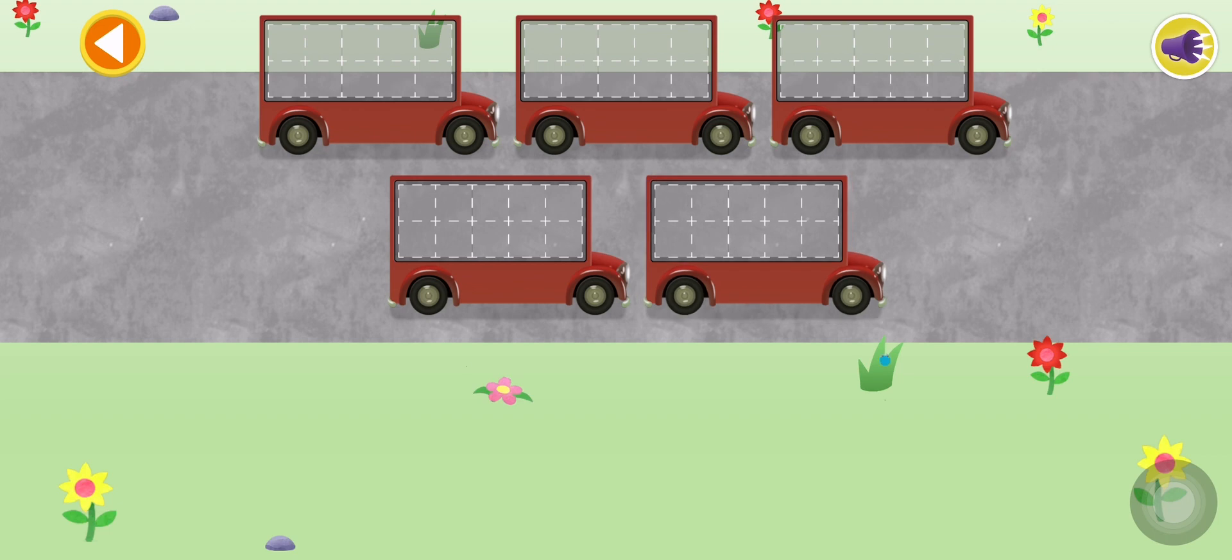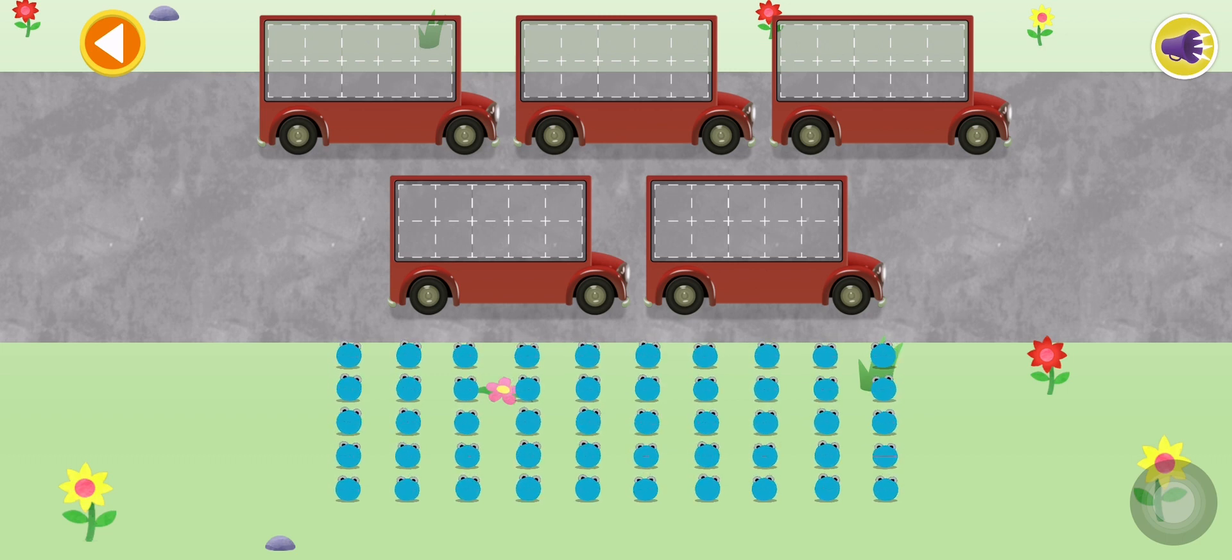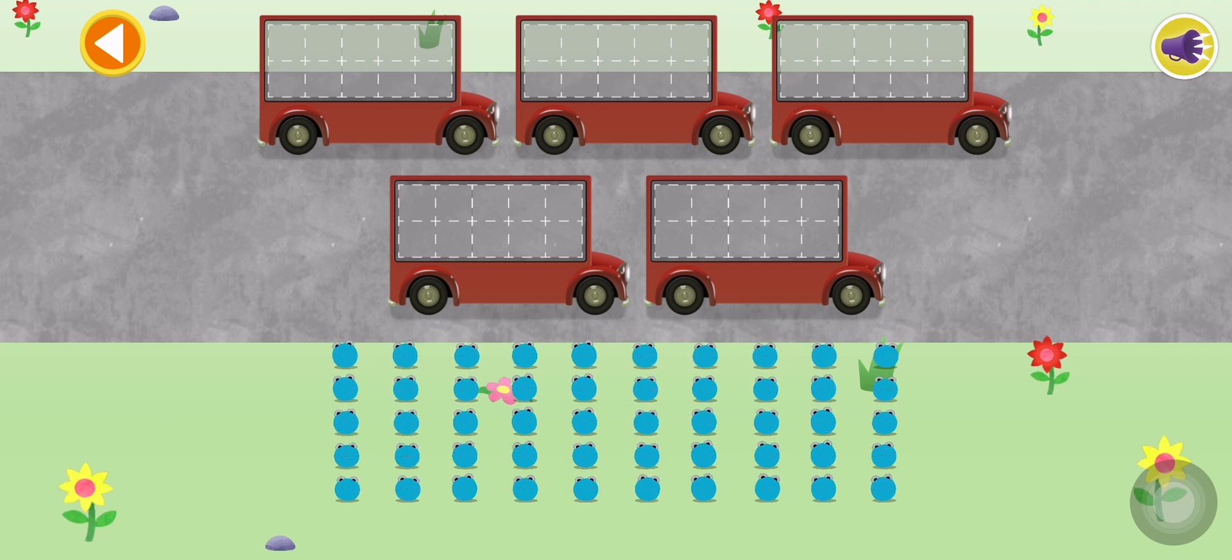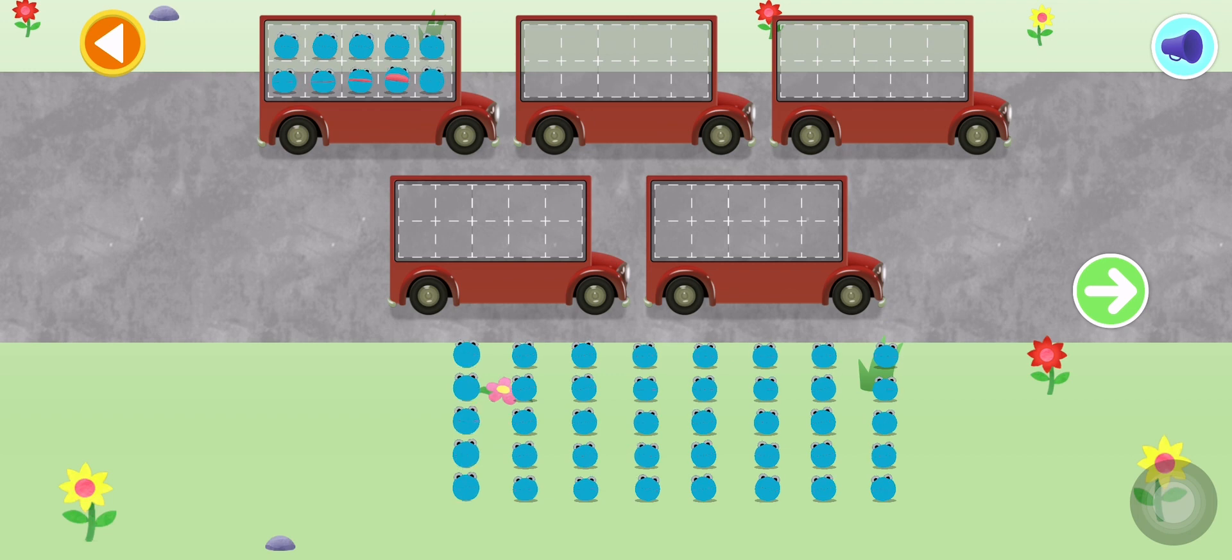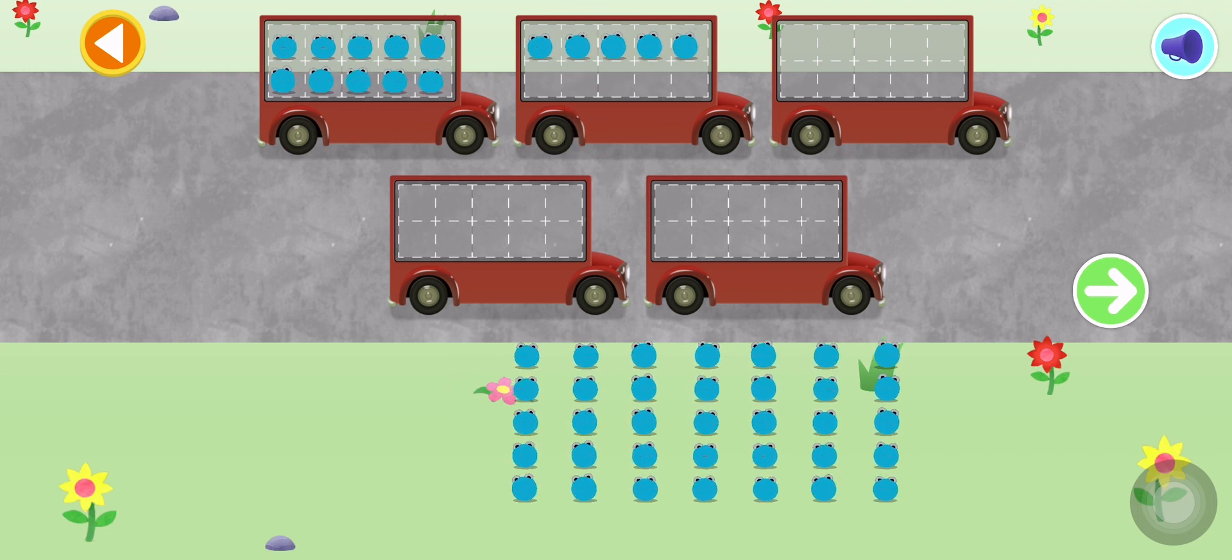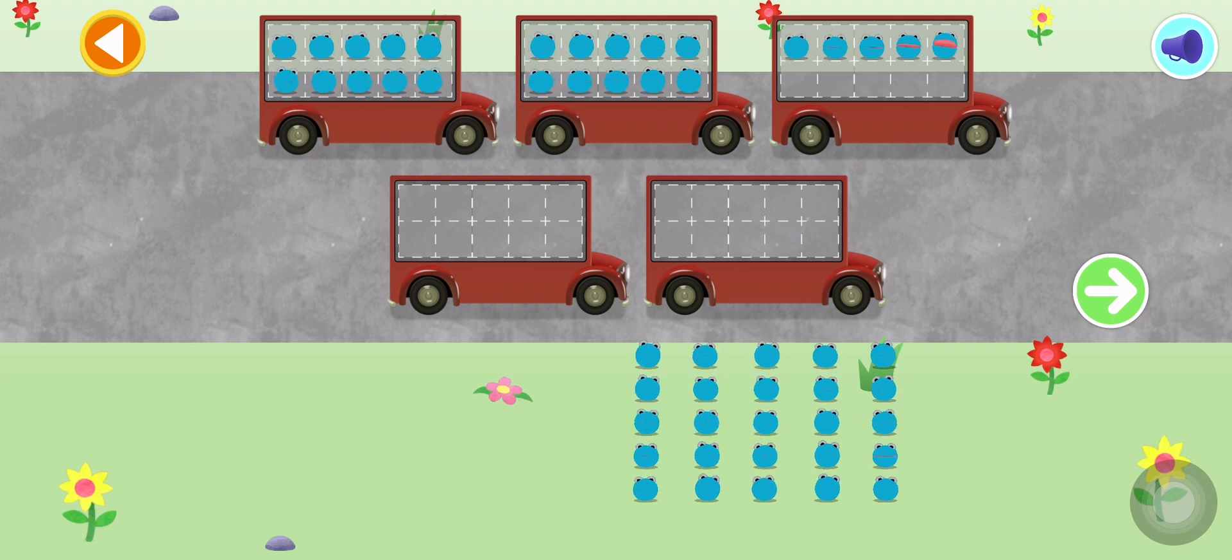Oh! There are too many number blobs to count in ones. Let's count in fives. Let's count 45 number blobs. Stop and press the button when you reach 45. Count the number blobs into the buses in fives.